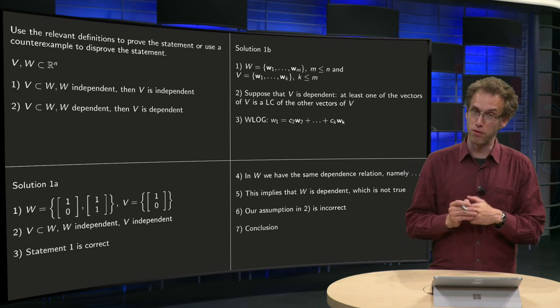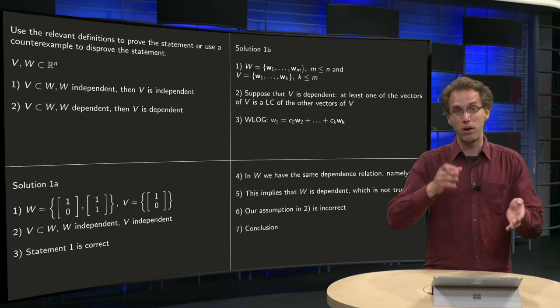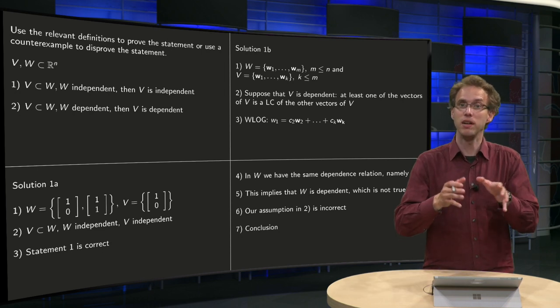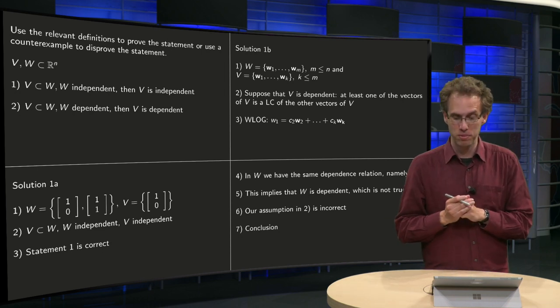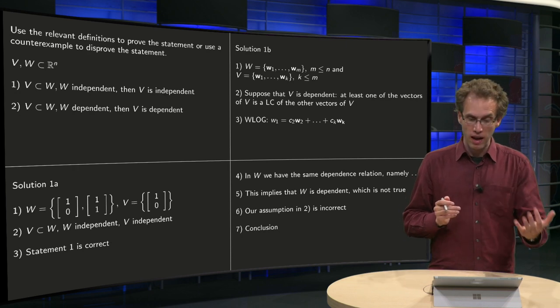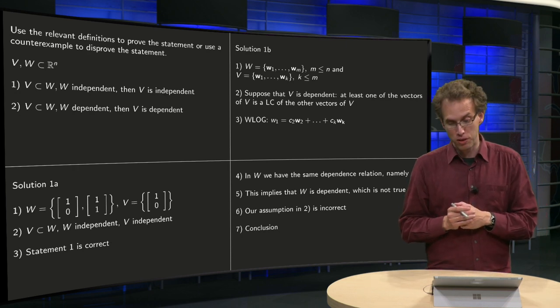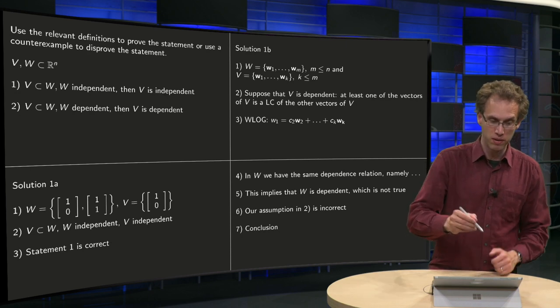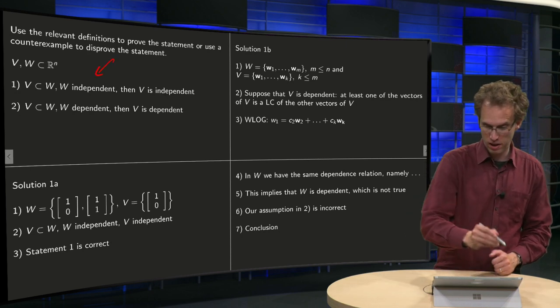Then, step 4, now in our big set W we can find the same dependent relation, namely, please add something here, and this implies that W is dependent, which is contradicting what's given, namely that W is independent.